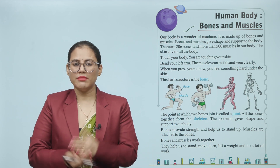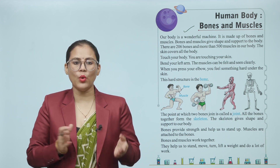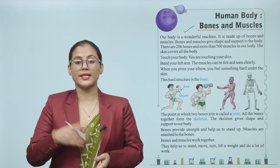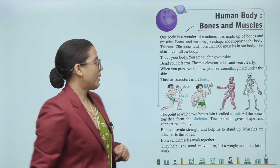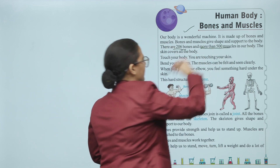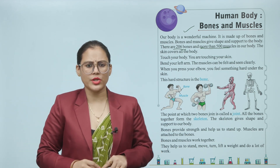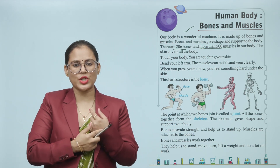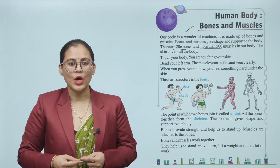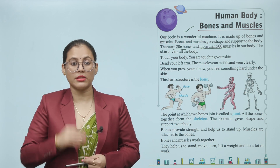Toh hai na, hamaari body ek wonderful machine hai. Bones and muscles se bani hai. Bones and muscles hamaari body ko shape provide karte aur support provide karte hai. Hamaari body mein 206 bones hai aur more than 500 muscles. Ab zer apni body ko touch kareenge — jab apni body ko touch karte hai to yeh hai apni skin. Jab apni left arm ko bent kareenge to muscles ko feel kar sakte hai aur dekh bhi sakte hai clearly.